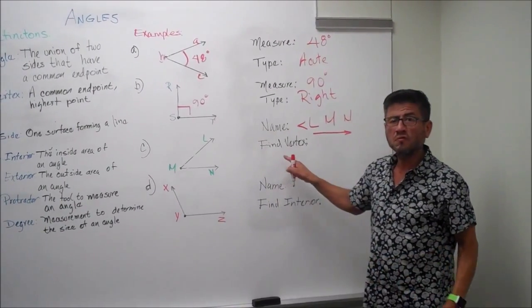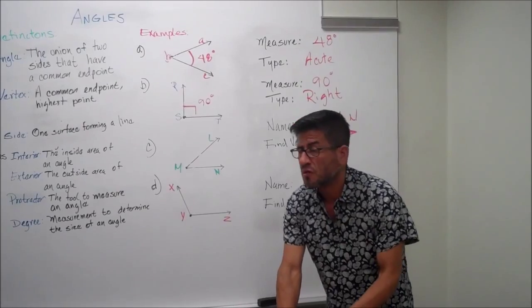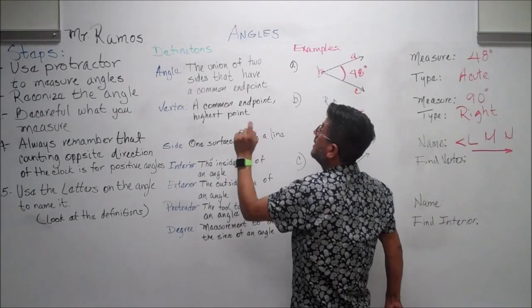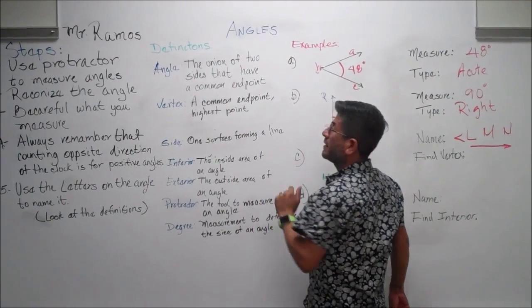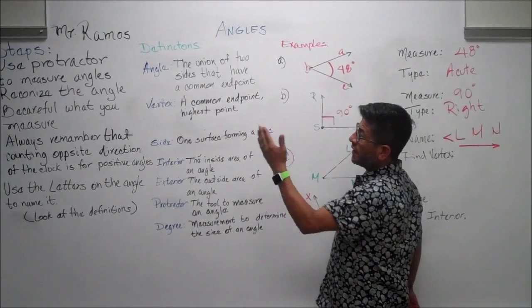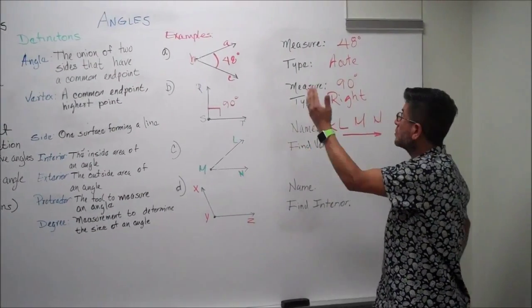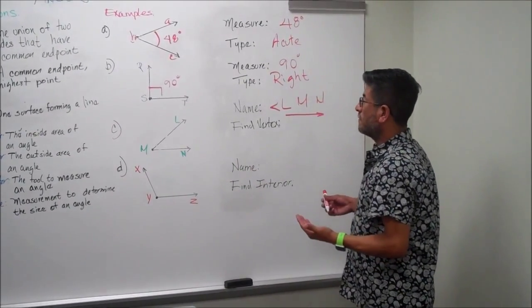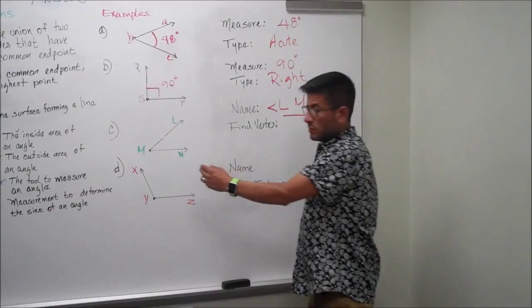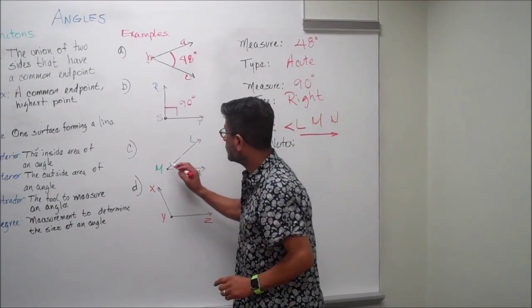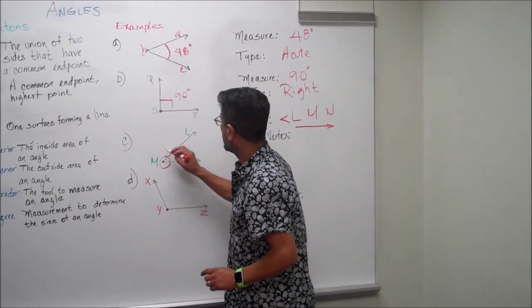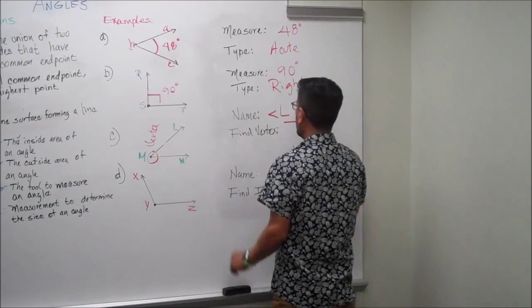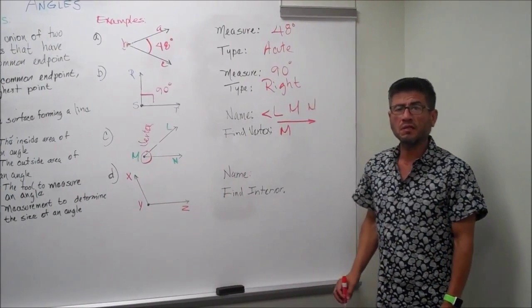Next one is asking us to find the vertex. Remember the definitions? You look for vertex — it says it's a common end point or the highest point. Look at your steps and definitions, and look at your angle right here. Where do we have the highest point? It's this one right here. You're going to circle it and name it vertex. And it's on the letter M — that's where your vertex is.